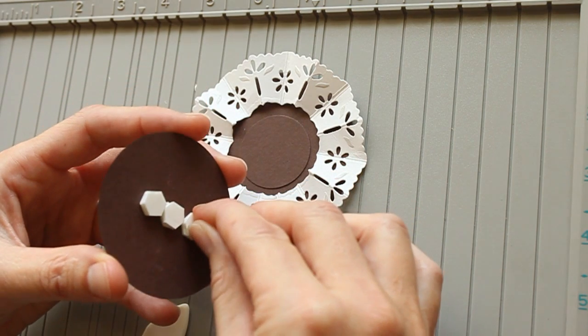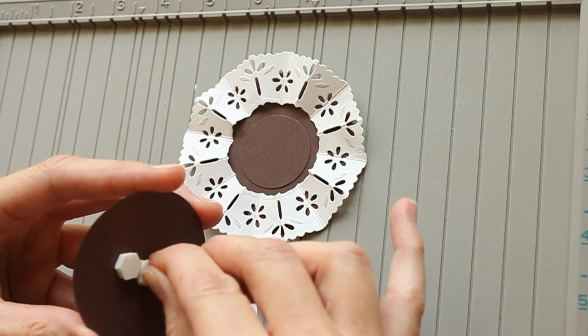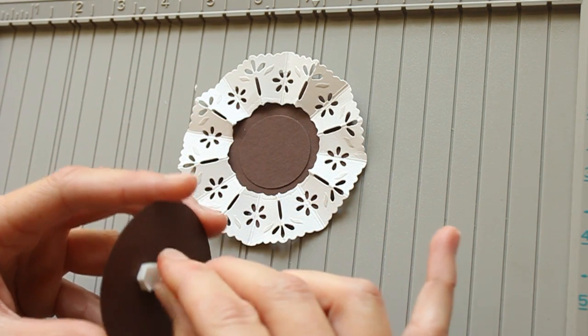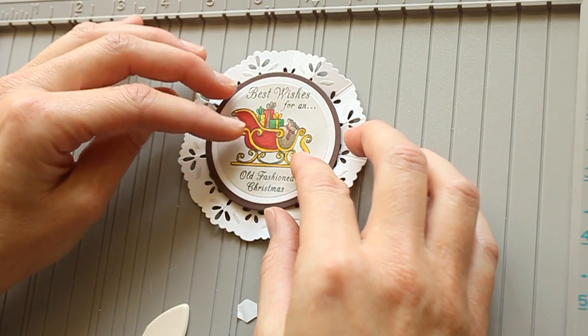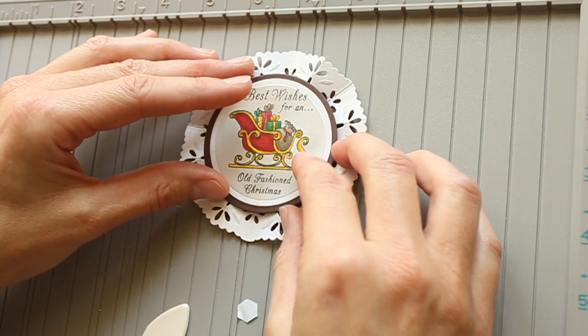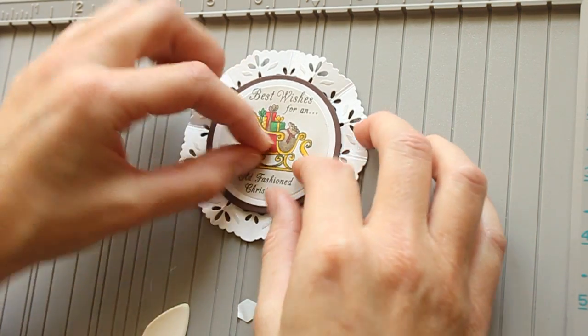And then just adhere your image. I added a double layer of dimensionals, so it will stick because the pleats go up pretty high or the ruffles. Center it again and tape it down.